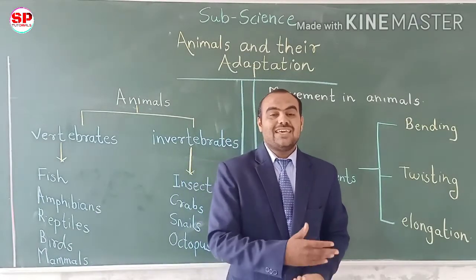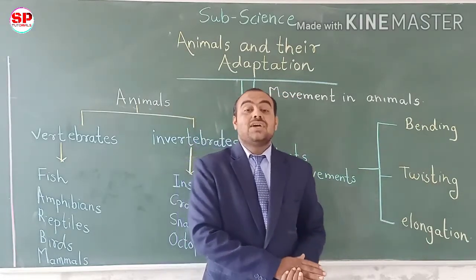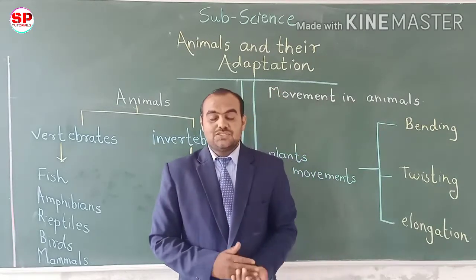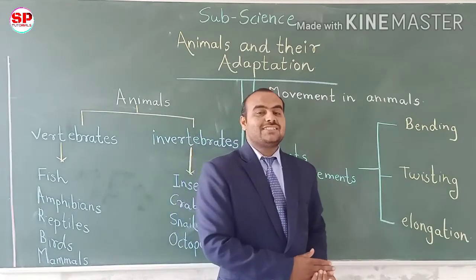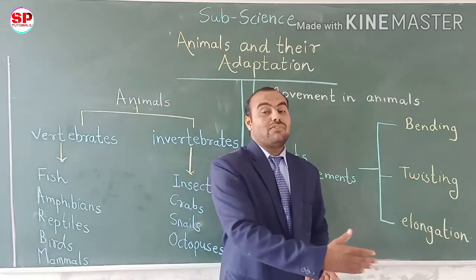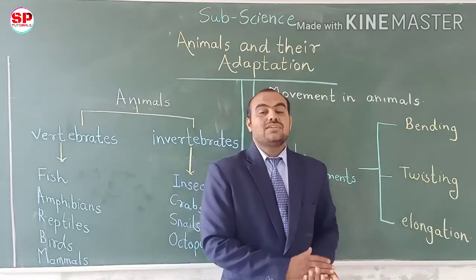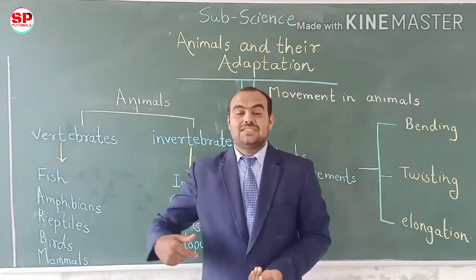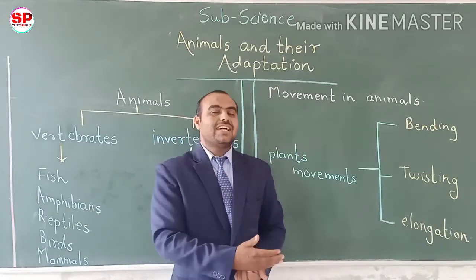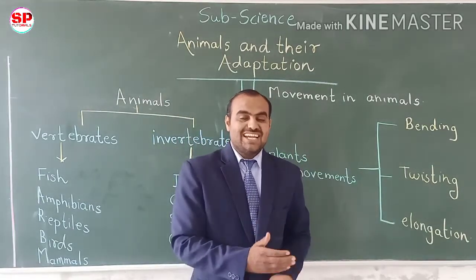Animals have different structures for locomotion. Some animals have limbs to walk from one place to another. Some insects and birds have wings to move from one place to another. Fish have fins and tails to move from one place to another. So we have discussed the details about the movement of animals.